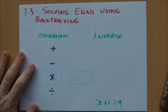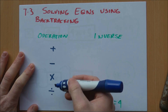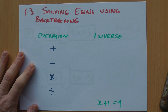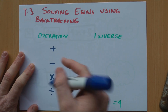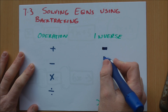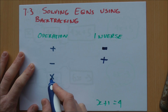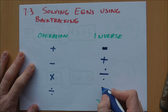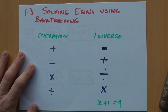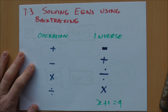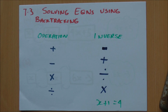The first thing I want to discuss is operations and their inverses. I've got the 4 operations listed here. Inverse just means the opposite of. The opposite of plus is minus, the opposite of minus is plus, the opposite of times is divide, and the opposite of divide is times. This is basically how we undo these operations, and you'll see how we need that in just a moment.